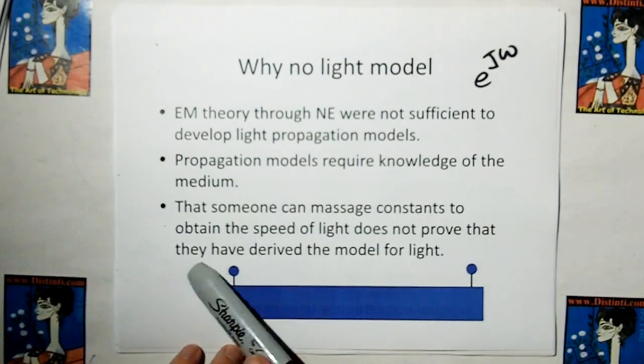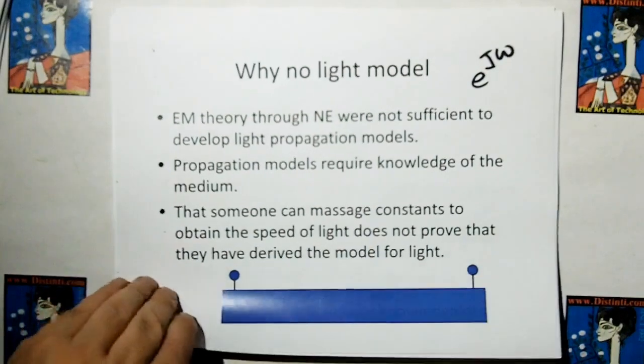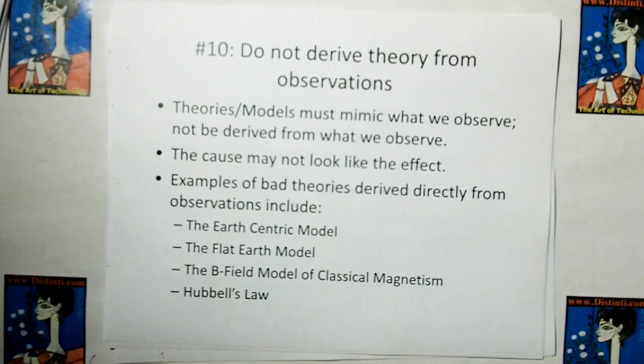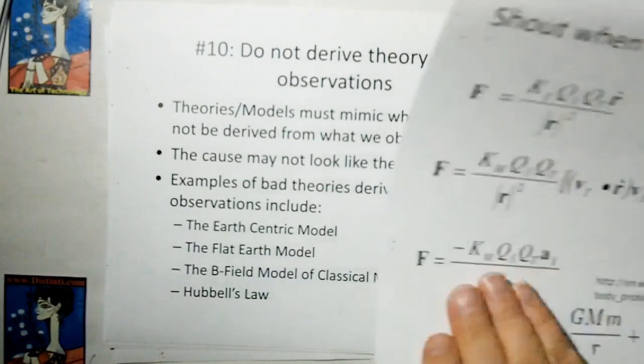So propagation models require knowledge of the medium. That someone can massage constants to obtain the speed of light does not prove they've derived the model for light. And again, do not derive theory from observations. In other words, we can't derive light from these empirical models because they're just empirical models.